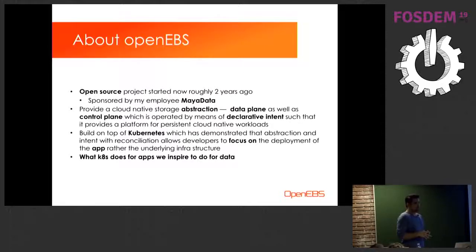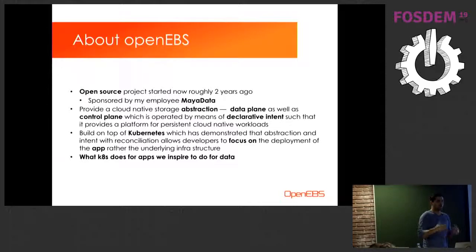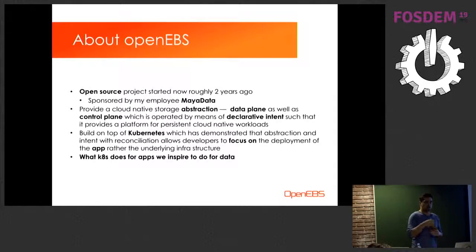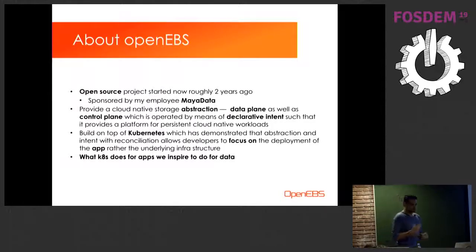The idea is that we want to provide a cloud-native abstraction for cloud-native workloads, in particular for persistent volumes. How do you do persistent volumes in a system orchestrated in the cloud, in Kubernetes in particular? It's built on Kubernetes, and one thing Kubernetes has proven over time is that through its abstractions, it allows the developer to actually focus on deploying the application and not worry about the underlying infrastructure. We're inspired to do for storage what Kubernetes does for apps.